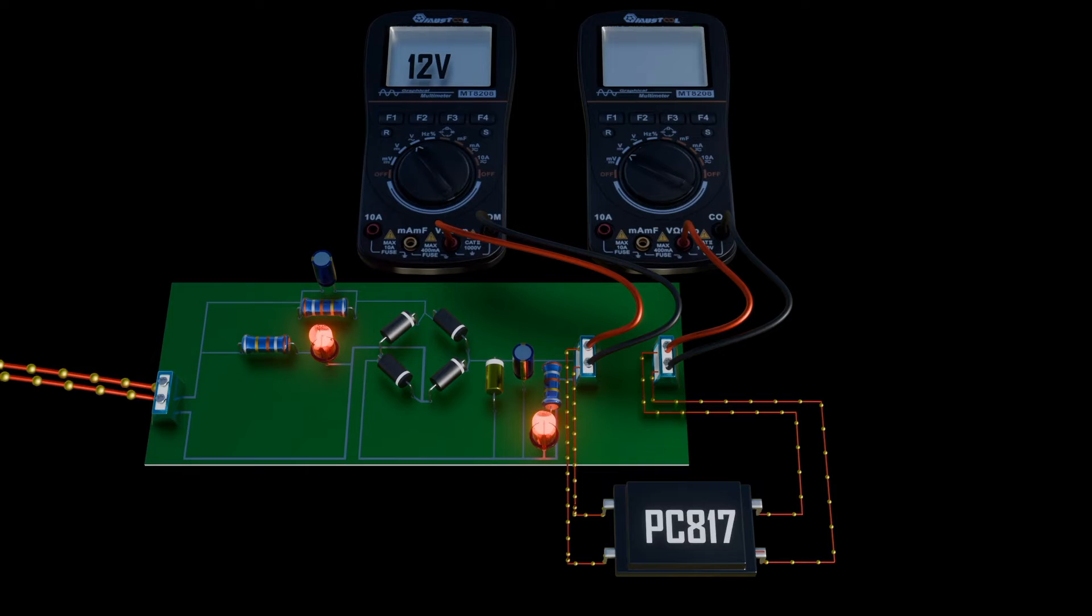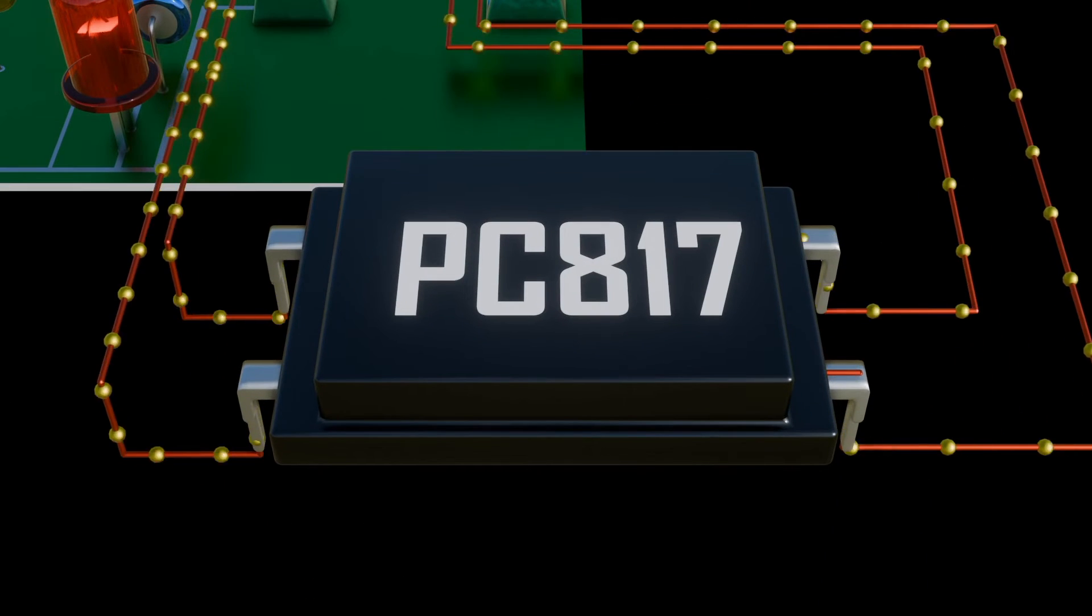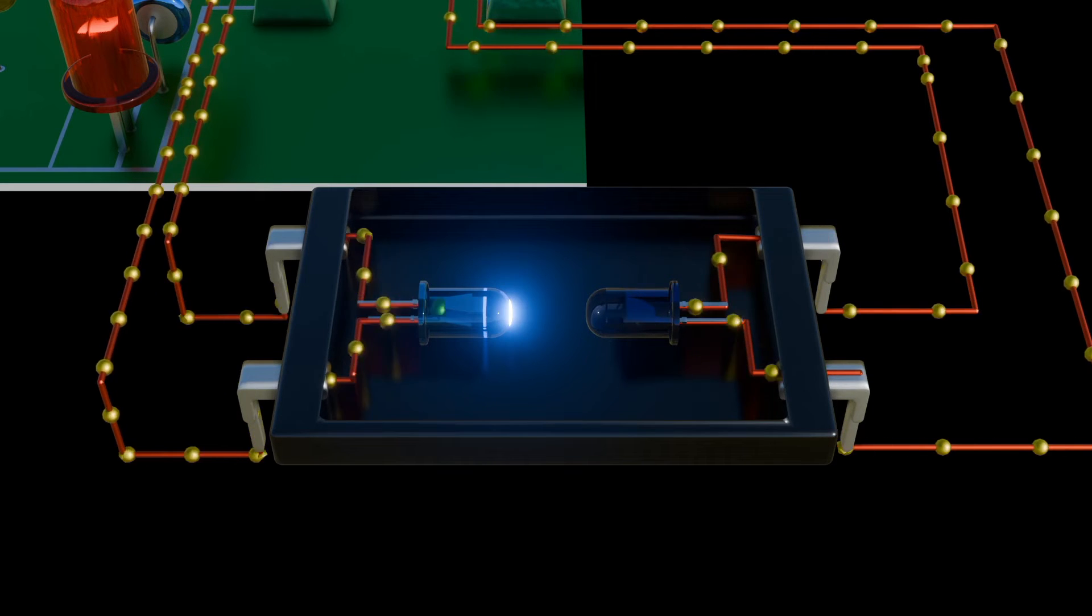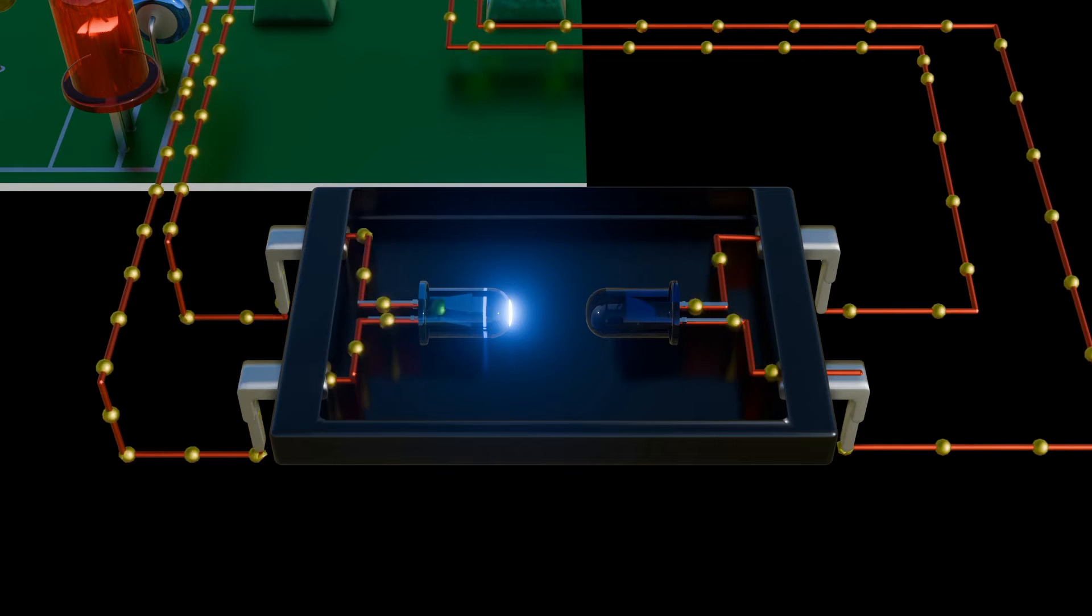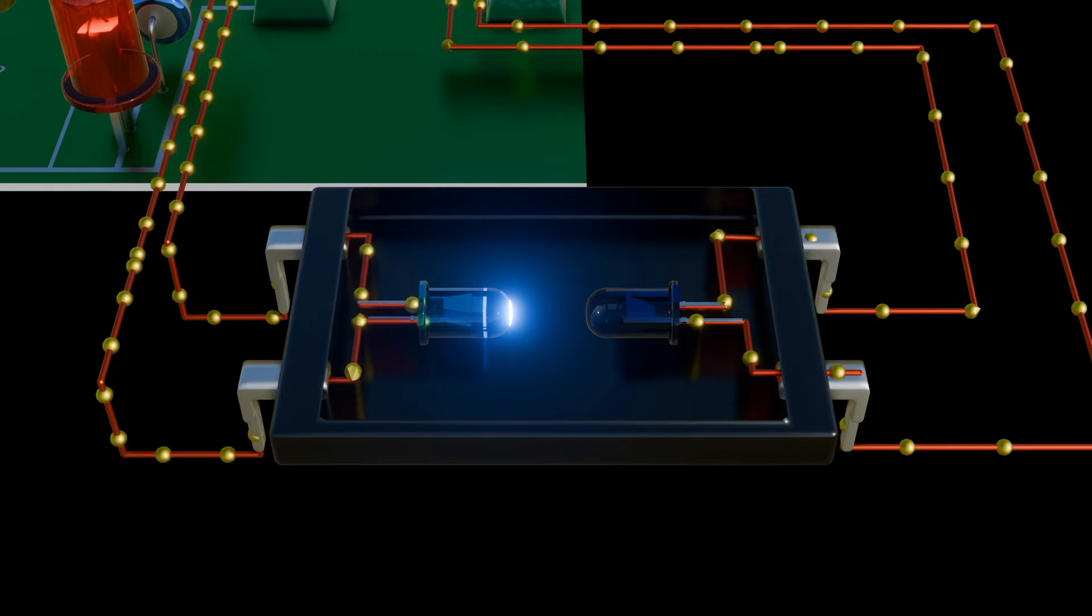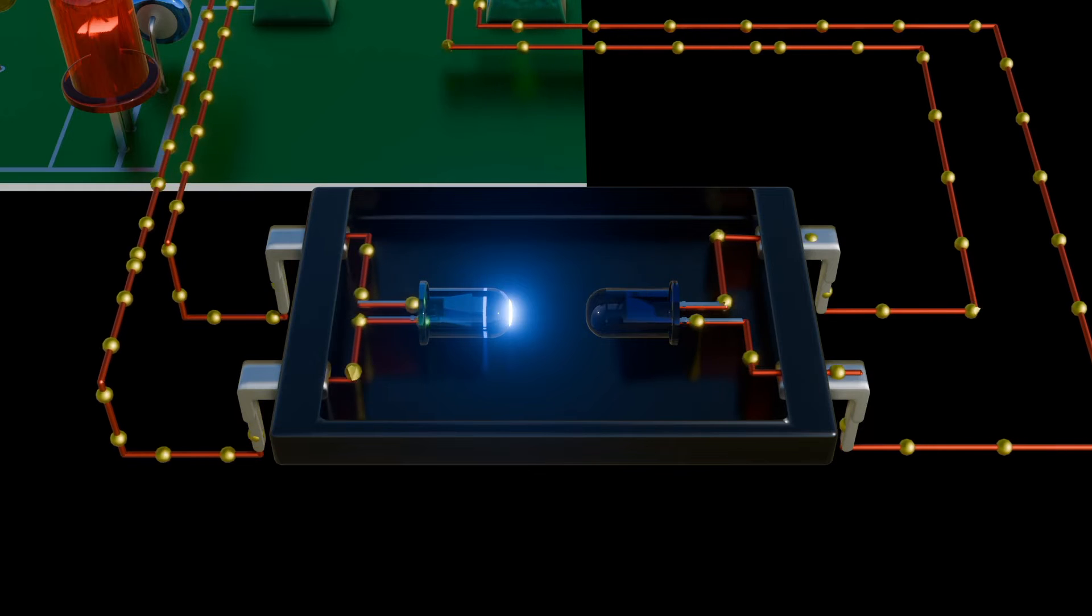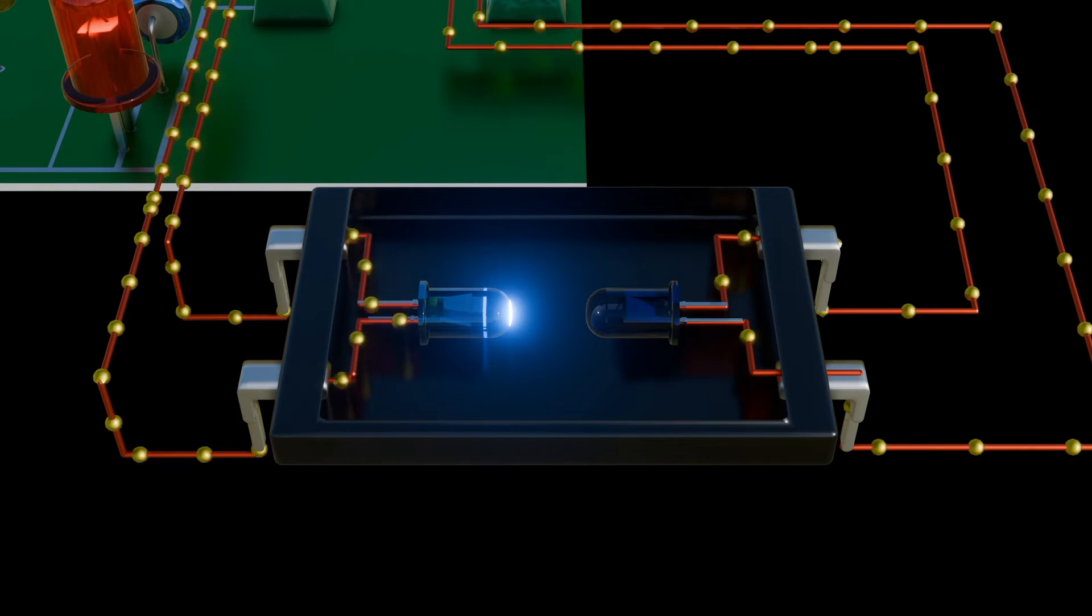When an electrical signal is applied to the input of the optocoupler, it powers the LED, causing it to emit light. This light travels across an insulating barrier within the component and reaches the photo detector on the output side. The photo detector then generates an electrical signal corresponding to the received light. Because the LED and photo diode are optically coupled but electrically isolated, the signal is transmitted without a direct electrical connection.